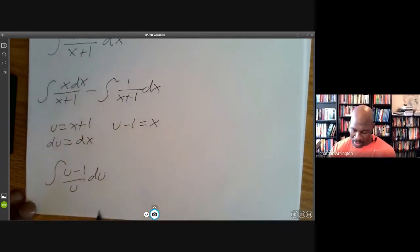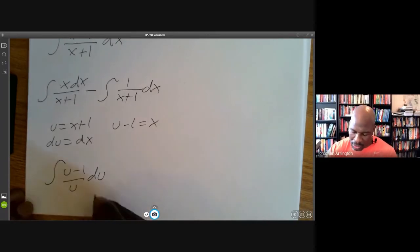u plus k over u is a lot easier than x over x plus k. Now we can just divide both of these by u, and it's the integral of du minus the integral of 1/u du.